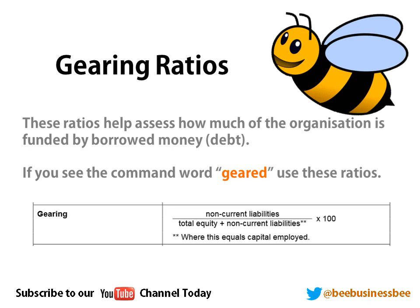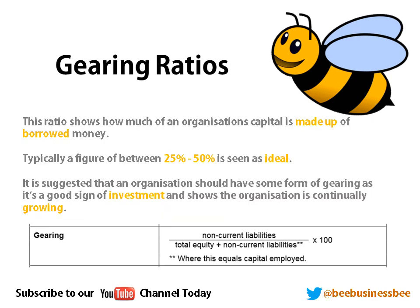Another obvious ratio is the gearing ratio. In the world of business, gearing is the term for debt — it measures how much your organisation is actually funded by borrowed money. The command word tends to be 'geared.' This ratio shows how much of an organisation is made up of borrowed money. Typically, you're looking for a figure between 25% and 50% as the ideal range. Some debt is actually seen as positive, because it can be viewed as a sign of investment — the organisation is continually trying to grow.